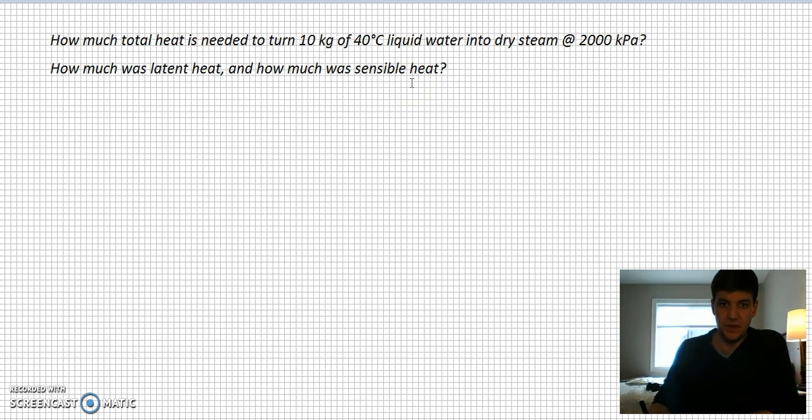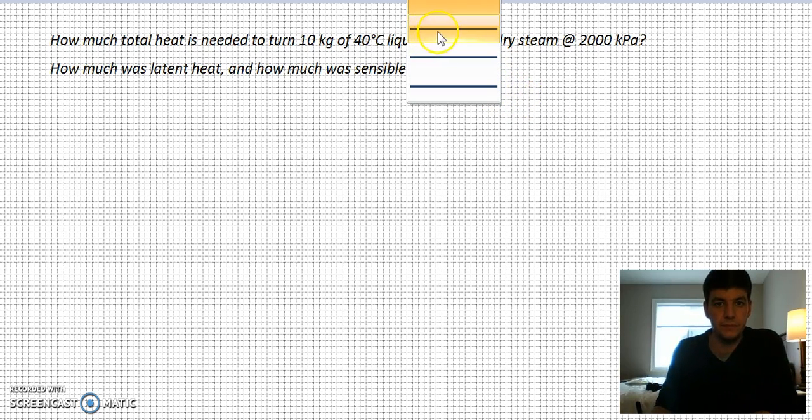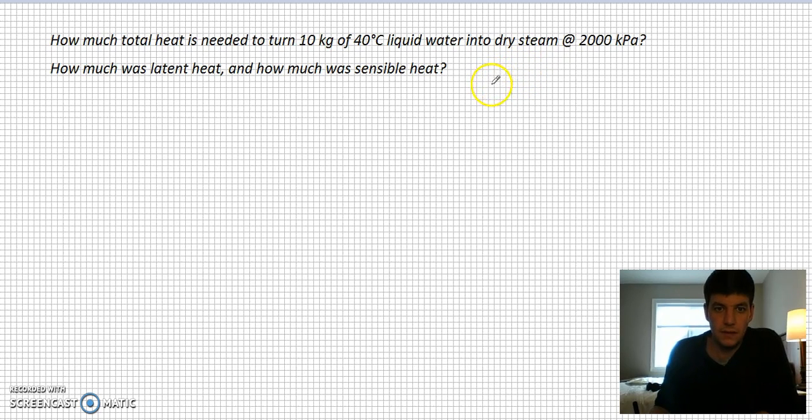If we think about what's happening here, we have some water at 40°C being heated and it eventually becomes dry steam, so X equals 1 at 2000 kPa. I'm assuming the whole heating process is taking place at 2000 kPa. So I need to find an H here and an H over here.